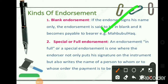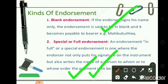Next is special or full endorsement, which is an extension of blank endorsement. In this, besides signing the instrument, the holder also writes the name of a person to whom or to whose order the payment is to be made. So in blank endorsement the endorser has only signed, whereas in special or full endorsement the name of the person to whom endorsement is being made — or by whose order payment will be made — is also written.